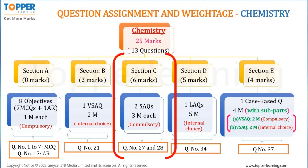In Section C, 6 marks are allotted to chemistry, wherein 2 short answer questions of 3 marks each have to be answered. Both questions will be compulsory. Question numbers 27 and 28 will be the chemistry questions in Section C.